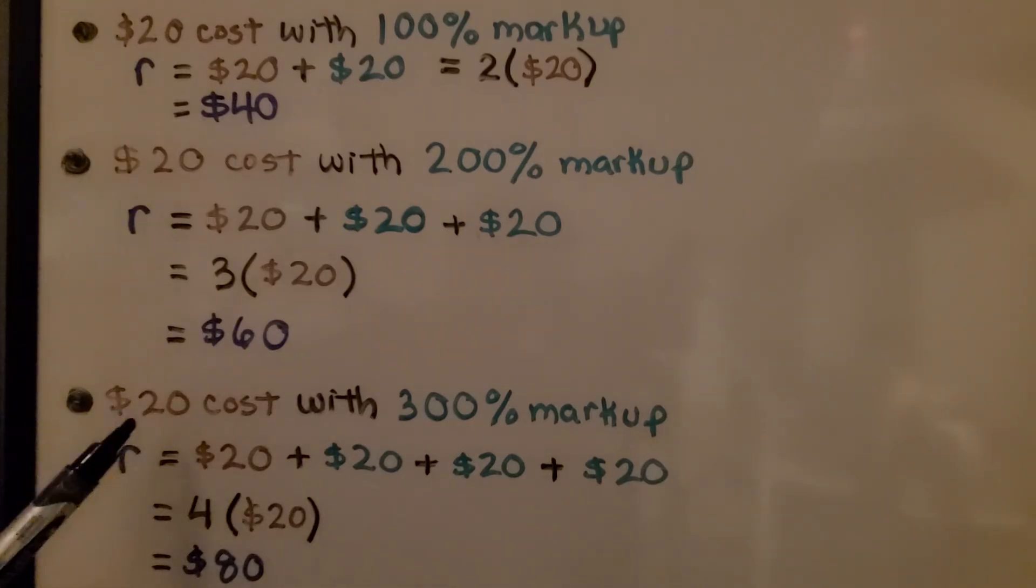If we have a $20 cost with a 300% markup, we add our original cost $20 plus three 20s for 100%, 200%, 300%. Because the markup is added to the original cost, we have 4 times $20, which would be $80.